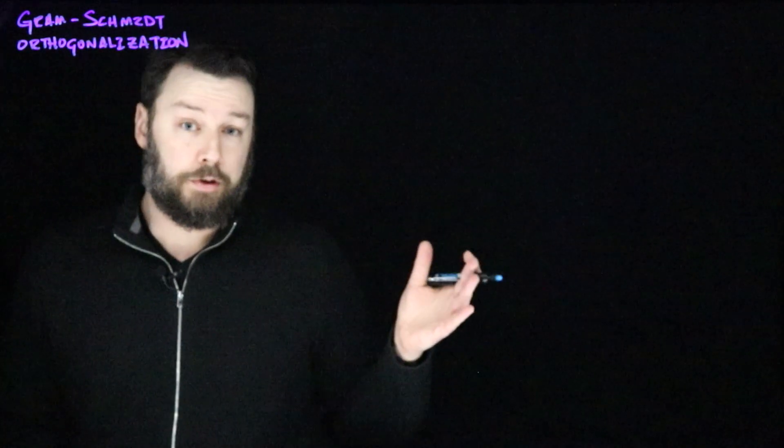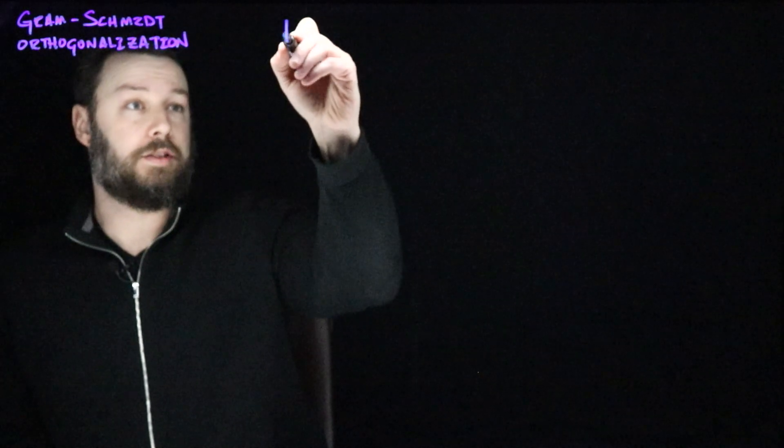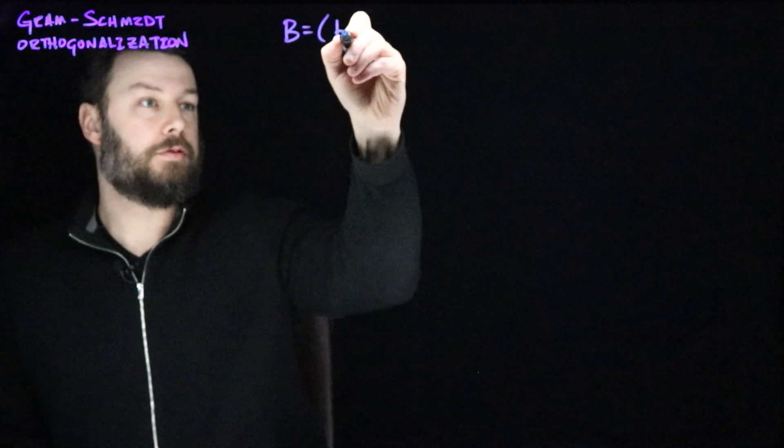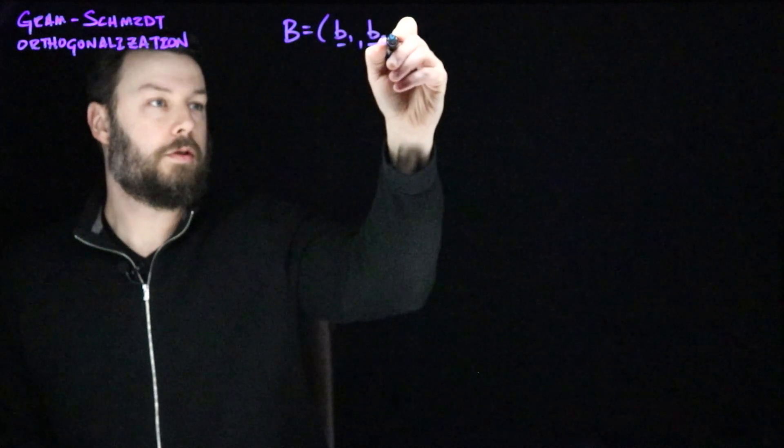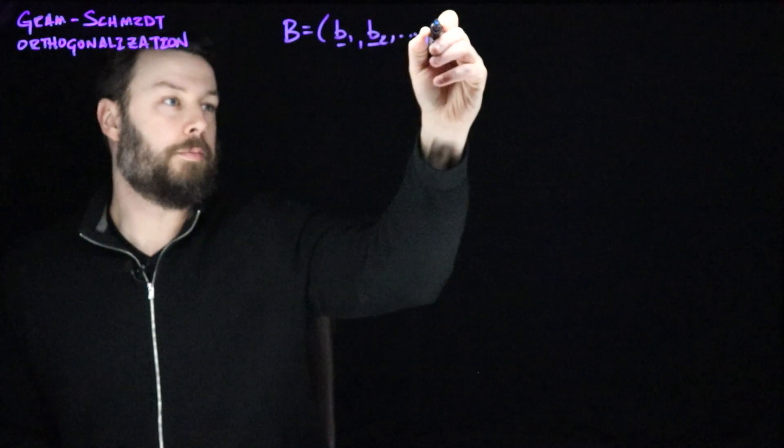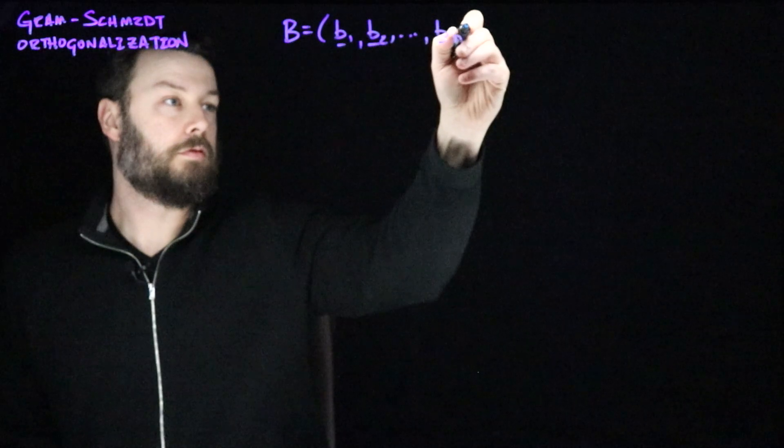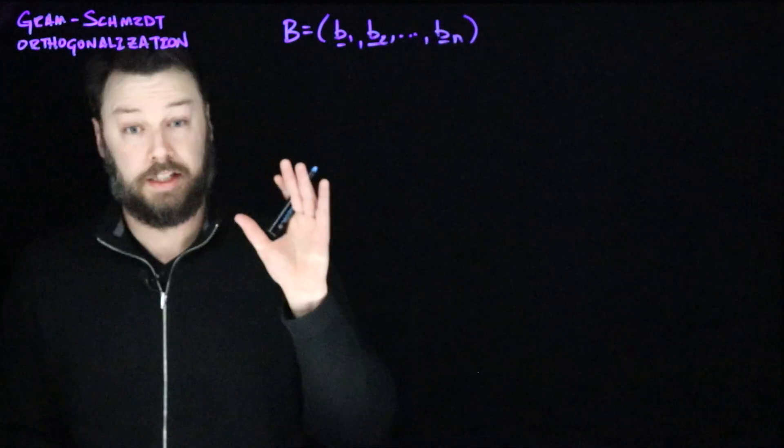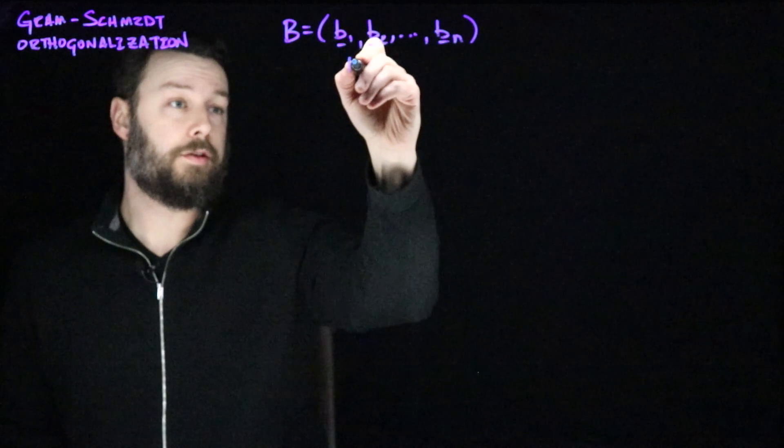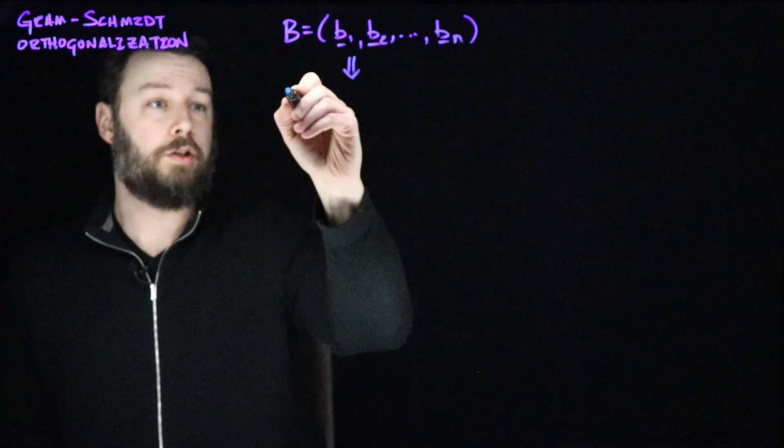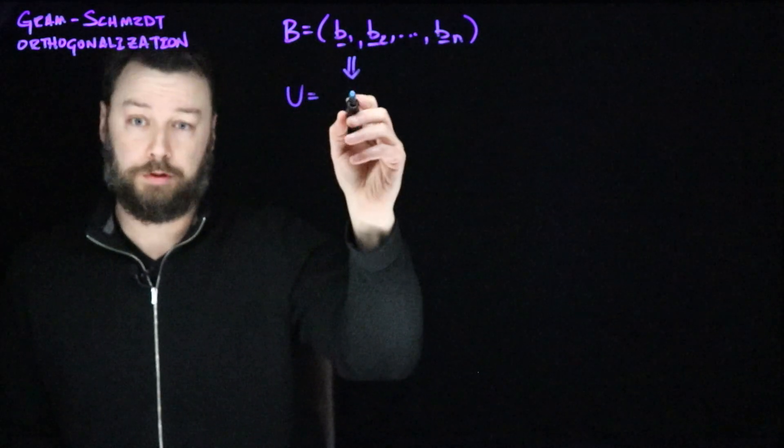Our starting point for Gram-Schmidt is to imagine that you have some not necessarily orthogonal basis. Let's imagine we have some basis with vectors b1, b2, out to bn. And the idea is to process this in some way that we wind up with a new basis that is orthogonal.